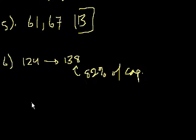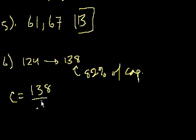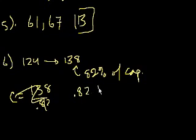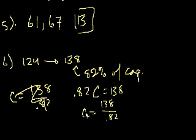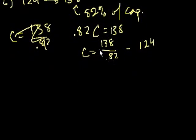So this is 82% of total capacity. So total capacity is going to be equal to 138 divided by 0.82. 82% of total capacity is equal to 138. So you divide both sides by 0.82, and you get capacity equals 138 divided by 0.82. And then they want to know how many billions of gallons were the reservoirs short of total capacity prior to the storm. So it's going to be this number, the total capacity, minus what they were prior to the storm, 124.